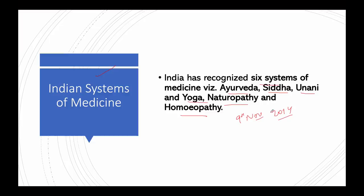The Ministry was formed to ensure the optimal development and propagation of these systems of healthcare. Earlier it was known as the Department of Indian System of Medicine and Homeopathy, written as ISM&H, which was created in March 1995. It was renamed the Department of AYUSH in November 2003, with focused attention on the development of education and research in Ayurveda, Yoga, Naturopathy, Unani, Siddha, and Homeopathy.